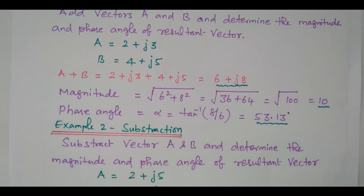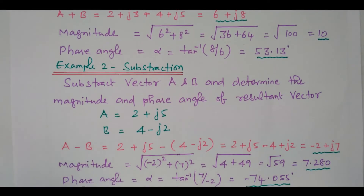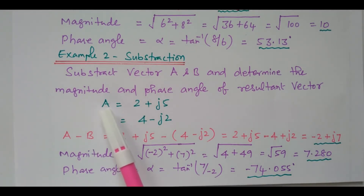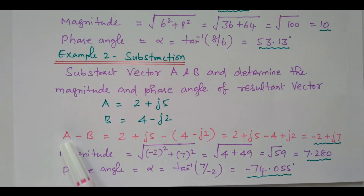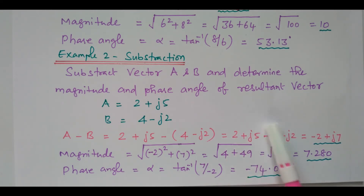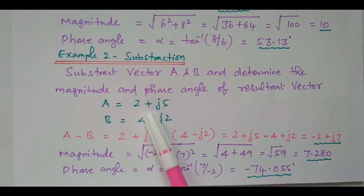Now we will go to the second problem, subtraction. Here another two vectors are available: A equal to 2 plus J5, B equal to 4 minus J2. The first question is A minus B. A is nothing but 2 plus J5, minus of 4 minus J2. Now multiply this negative inside, so that gives minus 4 plus J2.